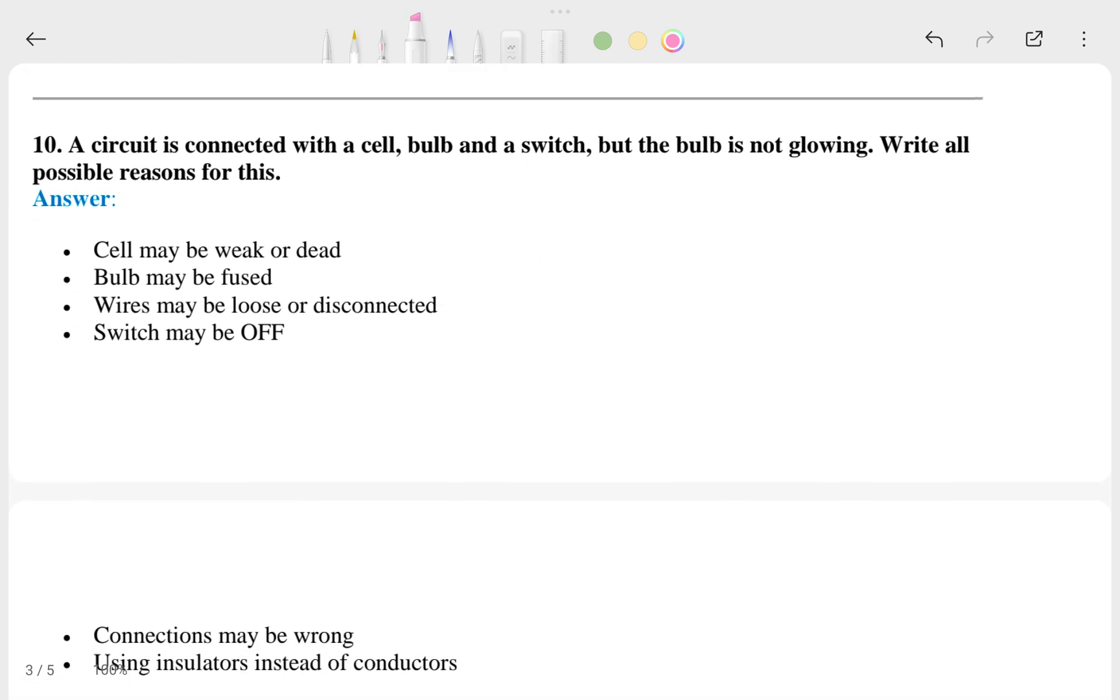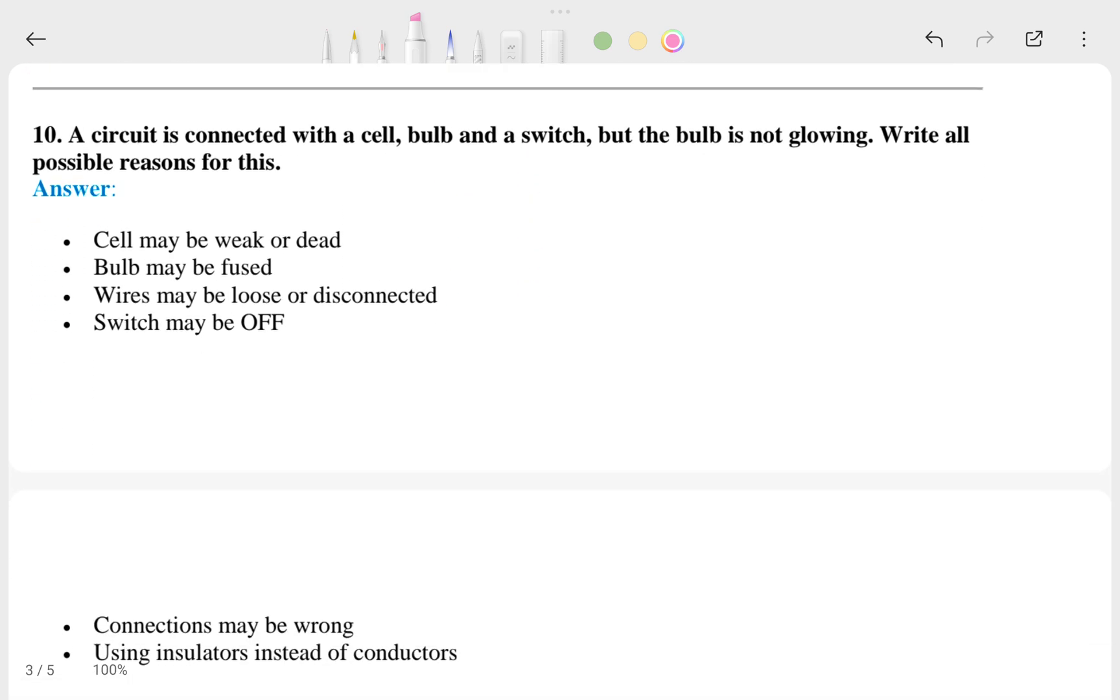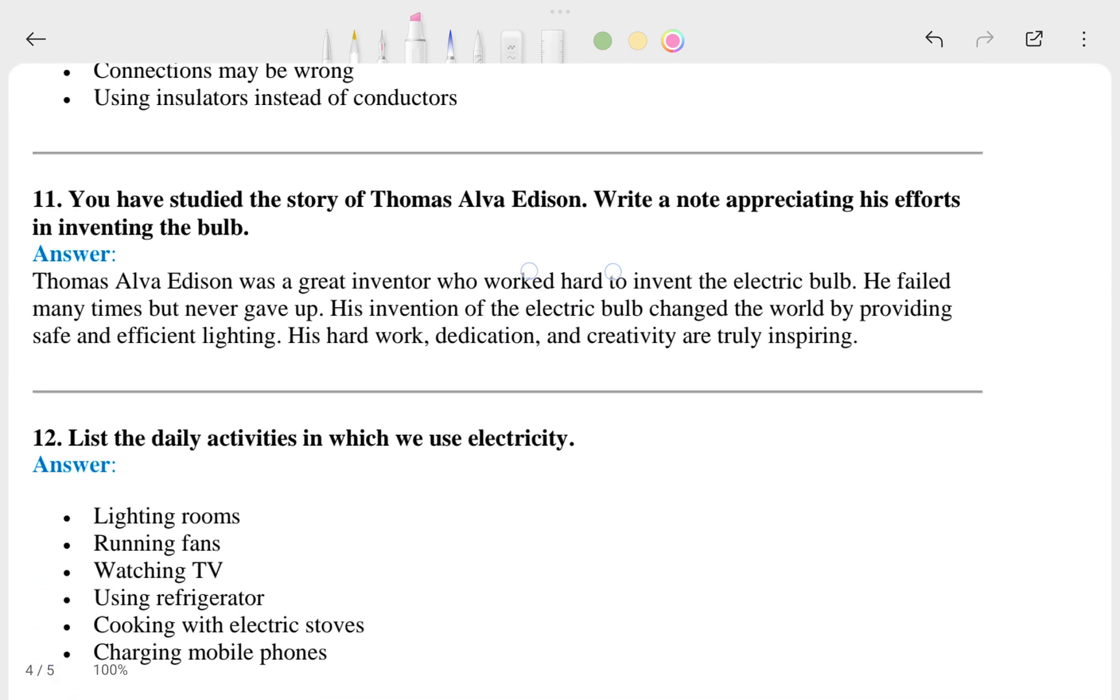After that, this is the tenth one. A circuit is connected with a cell, bulb, and switch, but the bulb is not glowing. Write all the possible reasons for that, and this is the answer.